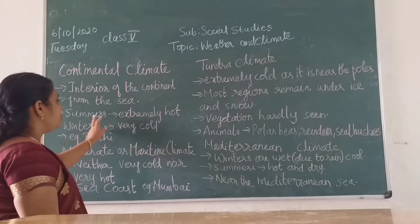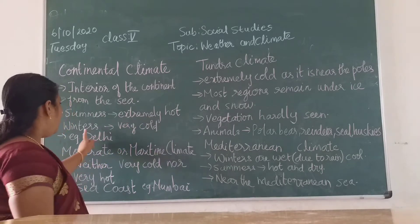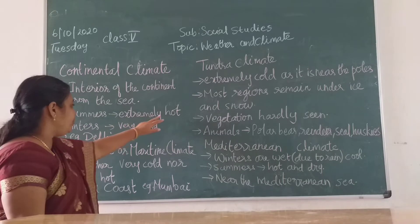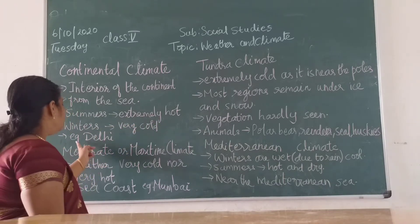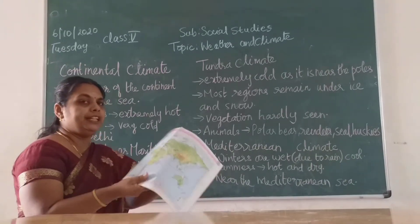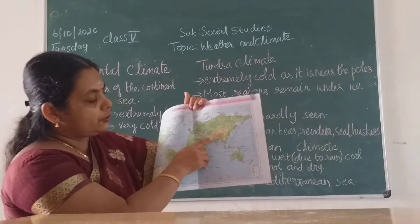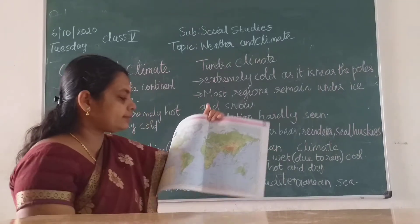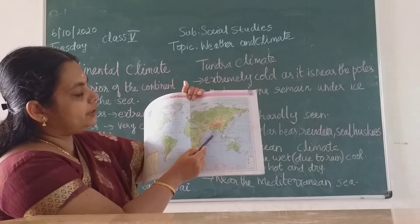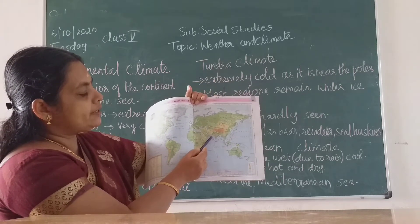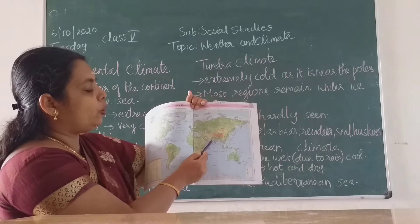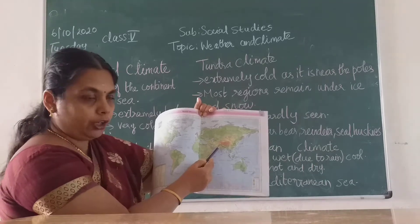In continental climate, summers are extremely hot and winters are very cold. For example, Delhi. You would have seen in the India map where Delhi is located — it is away from the coastal side or the sea side, forming inside the continental area. So it has extremely cold winters and extremely hot summers.